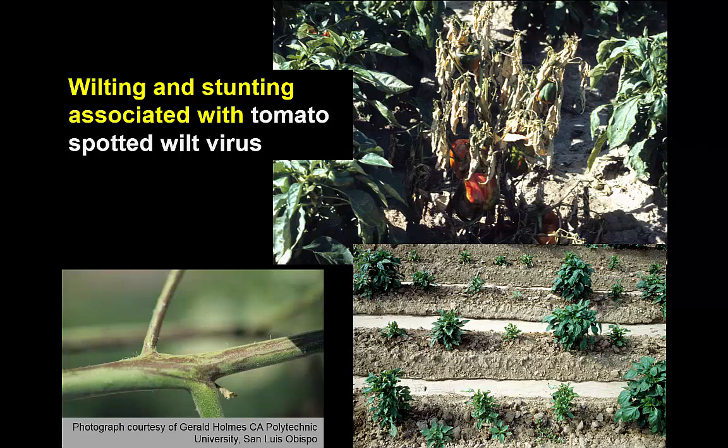This is a disease, as is impatiens necrotic spot, that is almost entirely associated with thrips in greenhouses in this part of the country. Tomato spotted wilt virus is usually present in garden crops if the transplants were infected in the greenhouse before we purchased them or in our own greenhouse. The spread of the virus within the field is much more limited — it does occur extensively in southern parts of the U.S. — but most times when people have tomato spotted wilt on their vegetable crops, it's because the plants got infected as transplants before they were put out in the field.